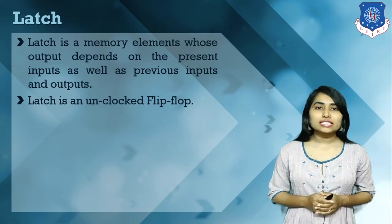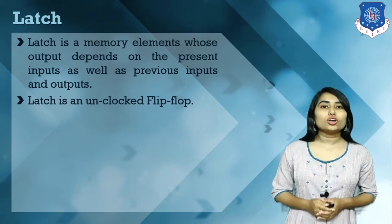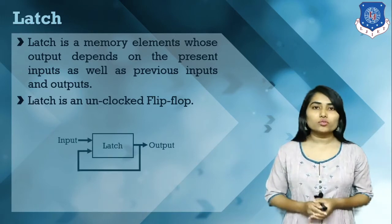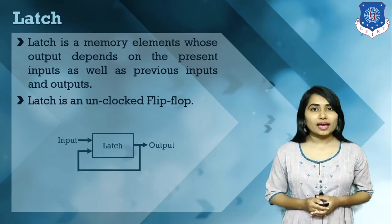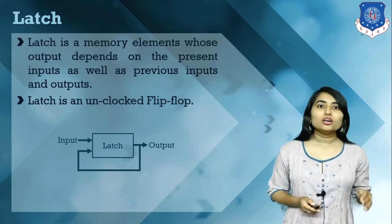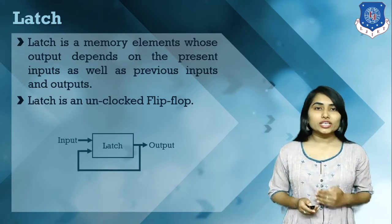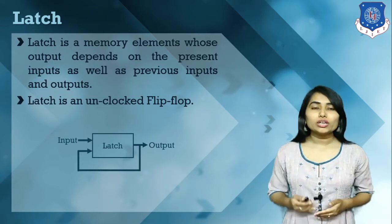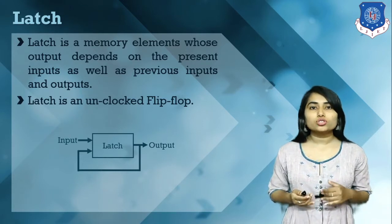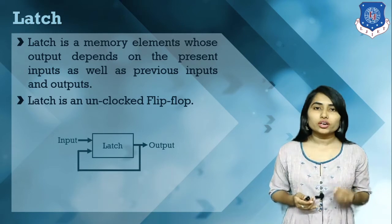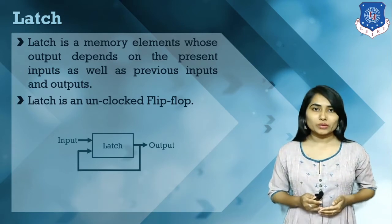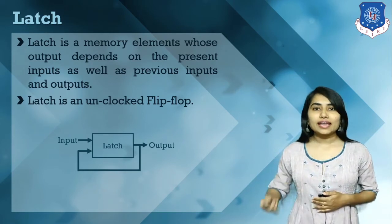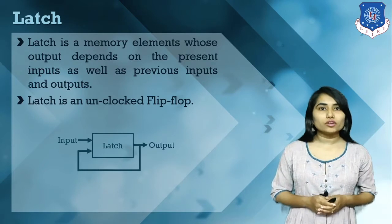So this latch is known as an unclocked flip-flop. We have a basic block diagram of this latch. In a latch, we have external input conditions and we have an output, and this past output is again fed back as input. So here we have present input and past output conditions, and using this, we get the next output. This is basically how the latch works, with no clock signals provided.